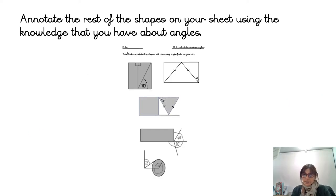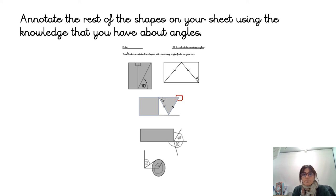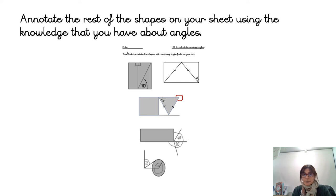Now I'd like you to have a go at the independent activity. You will find a sheet which I'd like you all to do — annotate as many angles as you can: right angles, any angle you can see. Think about the interior angle and the exterior angle around the shape. If you finish that, there is also an angle challenge you can do. Myself and Ms. Davin look forward to seeing all your work on Seesaw, and we'll catch up in the next maths lesson next week.